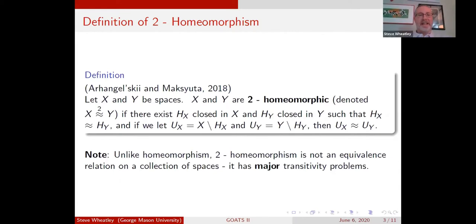One thing to mention: homeomorphism is clearly an equivalence relation. If you take a collection of spaces, we don't get the same thing at all for 2-homeomorphism. It's got major problems with being transitive. A lot of the work I've done has been trying to figure out if we can put certain conditions on groups of spaces and actually have them be transitive under 2-homeomorphism. That's been pretty hard. There's a lot of failure problems, even for spaces that are otherwise nicely behaved.